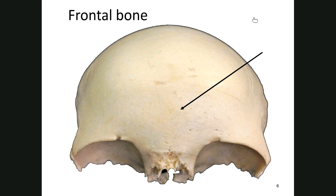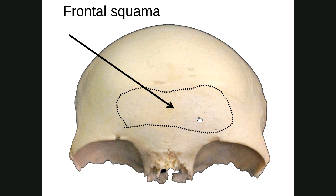The frontal squama — 'squama' means flat, like the squamous cell — is the flat portion of your forehead. If an arrow points to that area, you would write 'frontal squama,' but if it asks 'what bone is this,' you would write 'frontal bone.'